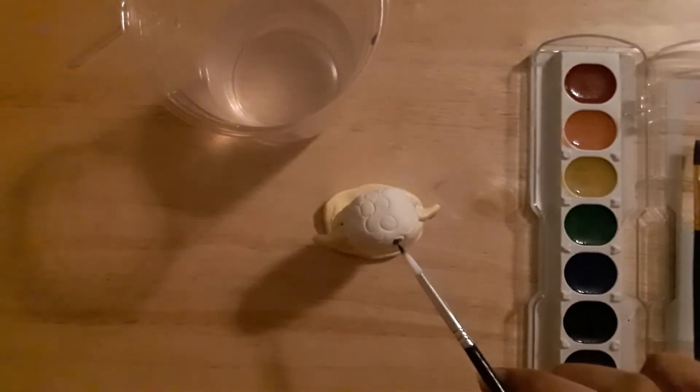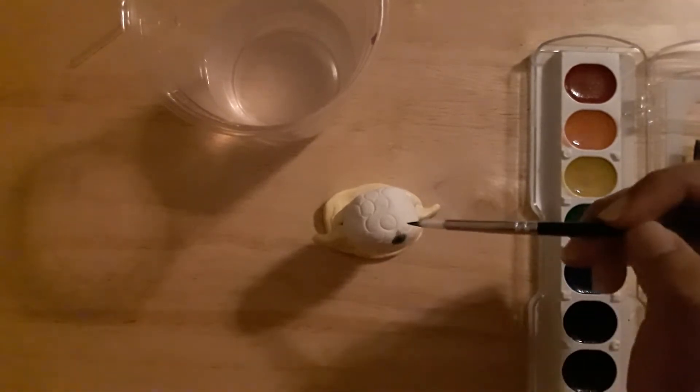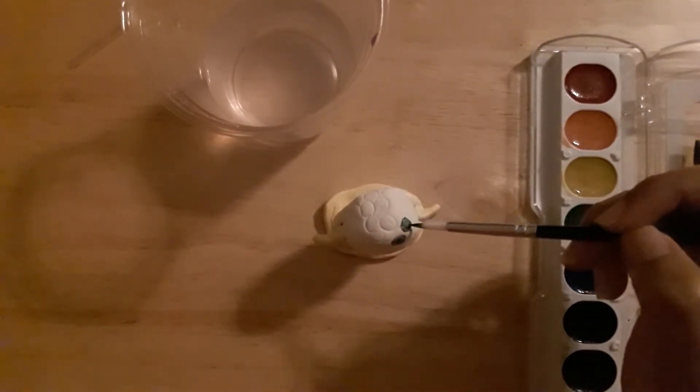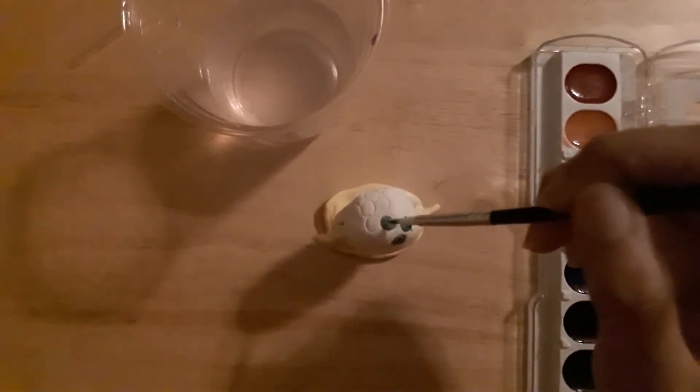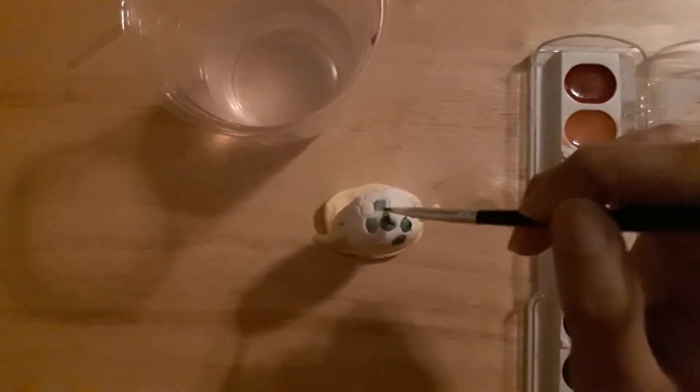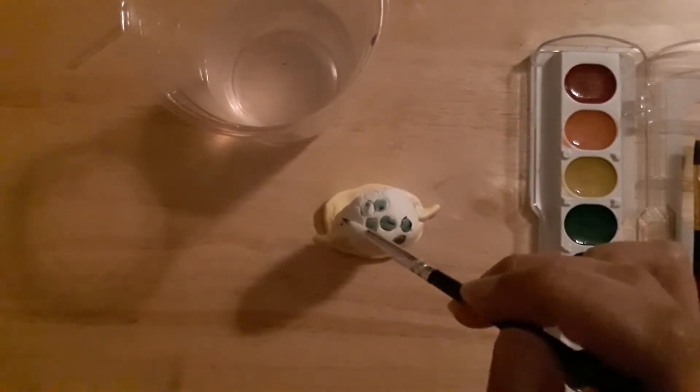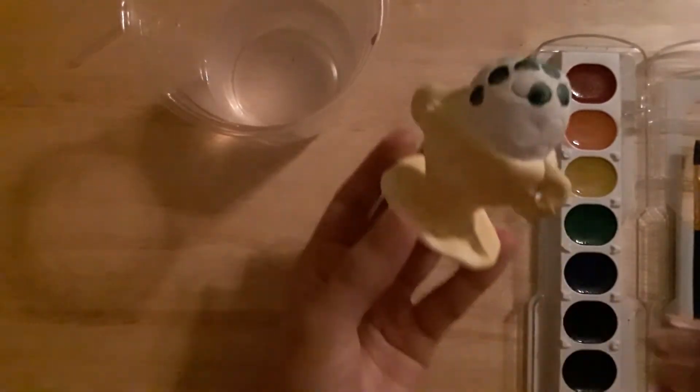Here I am just using the smaller brush to fill in my detail areas where I made the texture for my soccer ball, and I am trying to paint it as if it were a soccer ball.